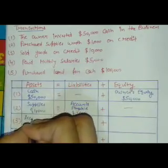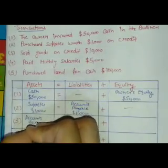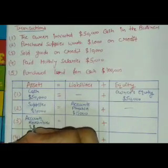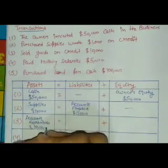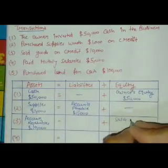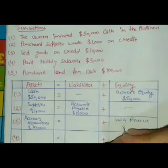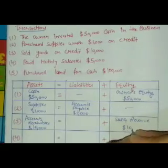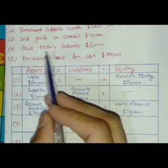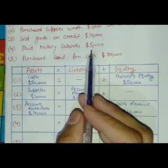Next, sold goods on credit for ten thousand dollars. This will increase the asset side by ten thousand dollars due to accounts receivable, and equity will also increase by ten thousand dollars due to sales revenue. As we know, revenue increases equity.